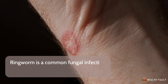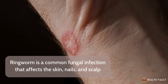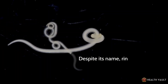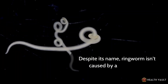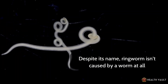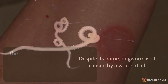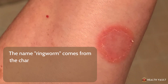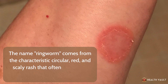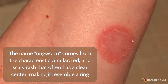Ringworm is a common fungal infection that affects the skin, nails, and scalp. Despite its name, ringworm isn't caused by a worm at all. The name ringworm comes from the characteristic circular, red, and scaly rash that often has a clear center, making it resemble a ring.